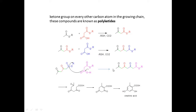This is a polyketide molecule. What are polyketides? They are compounds that have a ketone group on every other carbon atom in the growing chain. So the ketone groups are present at alternating positions — here is a gap, then a ketone group, then a gap, then a ketone group. Such compounds are known as polyketides.